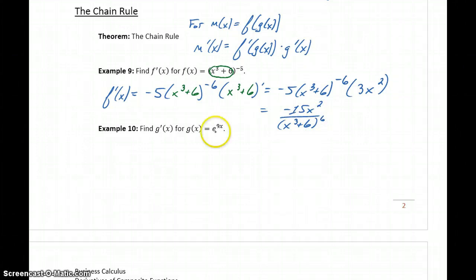We still just need to recognize whatever that inner function is. In example 10, the inner function is 9x. So we'll start off by finding the derivative g prime of x by following the rule for e to the x.